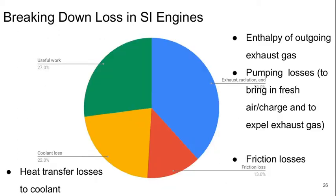Roughly, if we break down the loss sources — or where does the energy go in a spark ignition engine — a little over a quarter of it probably goes to useful work. About 40% goes to leftover enthalpy in the outgoing exhaust gases and also into the pumping losses, which is essentially the work needed to bring in fresh gas into the cylinder and to get the old exhaust gases out. Friction losses are somewhere around 12–13%, and then the remainder is heat transfer to the coolant.